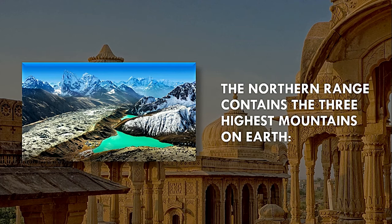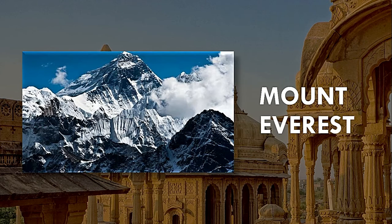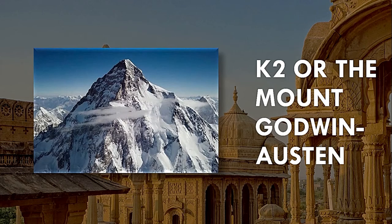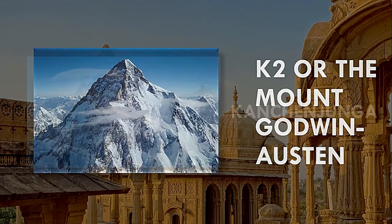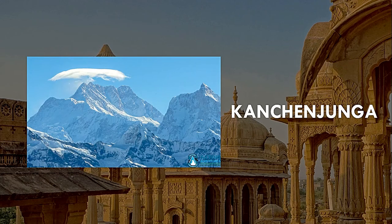The northern range contains the three highest mountains on earth: Mount Everest, K2 or the Mount Godwin-Austin, and Kangchenjunga.